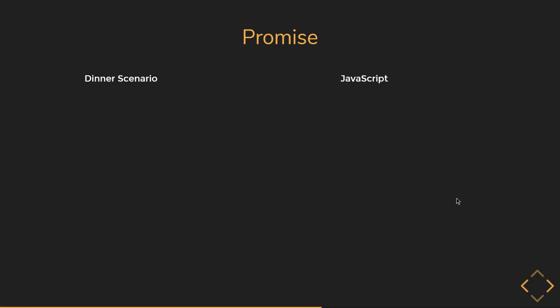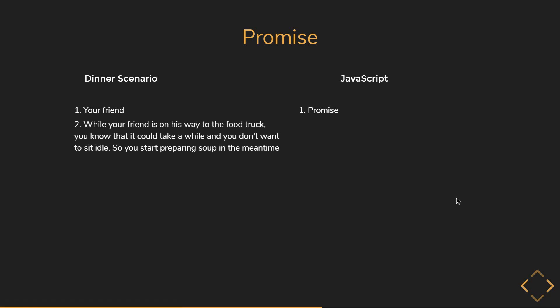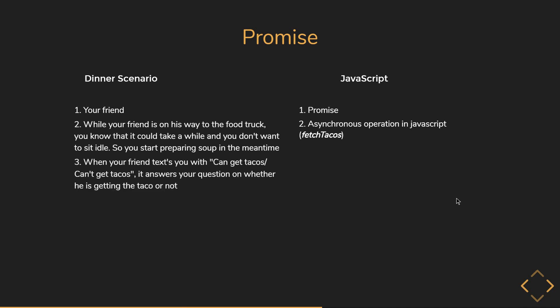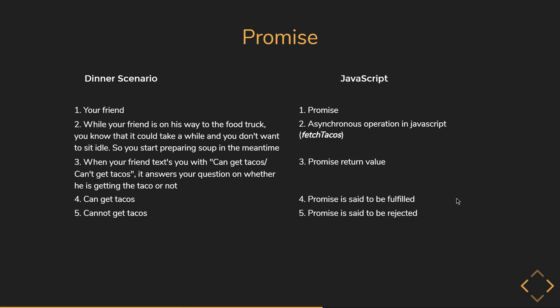Now let's pick the important bits from this scenario and relate it back to JavaScript and promises. Your friend is like a promise in JavaScript. While your friend is on his way to the food truck, you know it could take a while and you don't want to sit idle, so you start preparing soup in the meantime — this is an analogy to an asynchronous operation in JavaScript. When your friend texts you with 'can get tacos' or 'can't get tacos', that is the promise return value. If the return value is 'can get tacos', the promise is said to be fulfilled. If the return value is 'cannot get tacos', for whatever reason, the promise is said to be rejected.